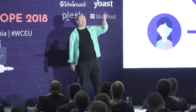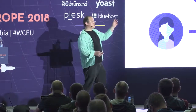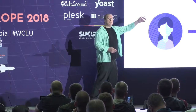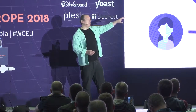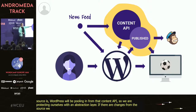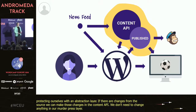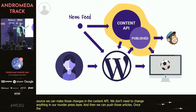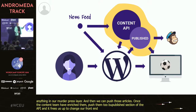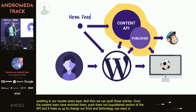The architecture we'll be using creates a content API — a Node server that ingests those news stories from press wires. WordPress then pulls from that content API, protected by an abstraction layer. If there are changes from the source, we make those changes in the content API without touching our WordPress layer. Once the content team enriches articles, we push them to a published section of the content API, which also frees us to change our front-end technology — React, Vue — and push to other services like newsletter services or dedicated apps.